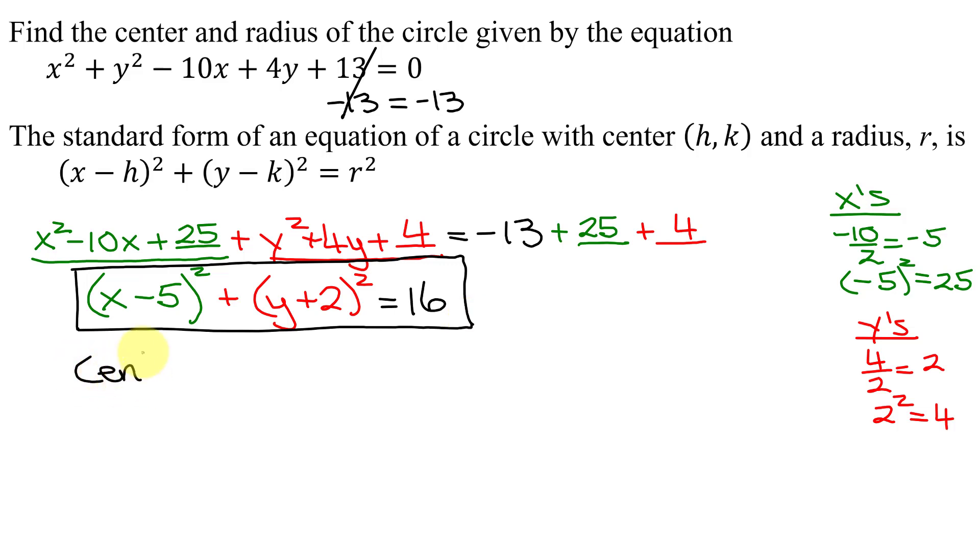Now to find the center of the circle. The x-coordinate of the center is at the opposite of this number, so it's at the opposite of negative 5, which is positive 5. The y-coordinate of the center k is at the opposite of this number, so it's at the opposite of positive 2, which is negative 2. The center of this circle is at the ordered pair (5, -2).